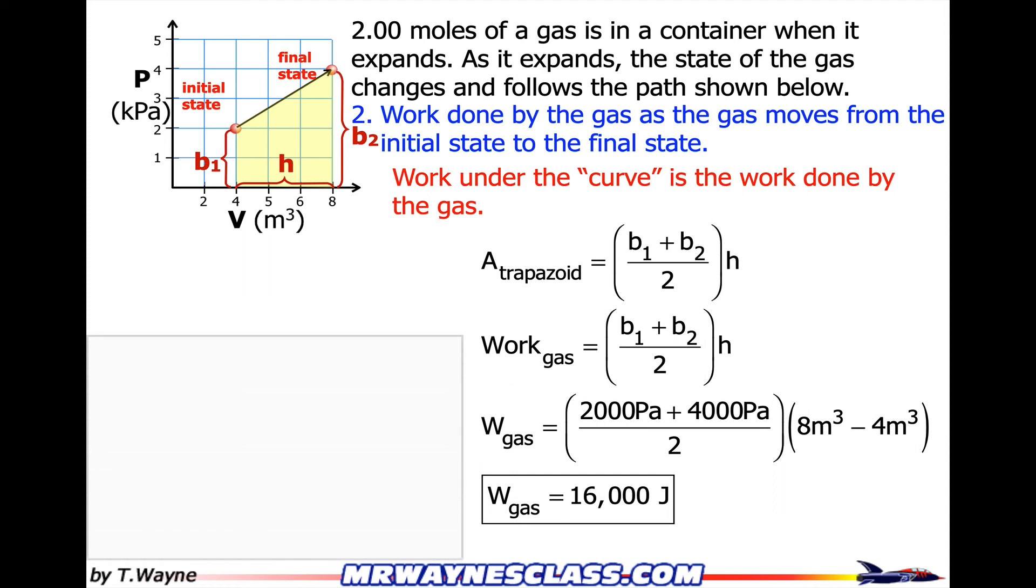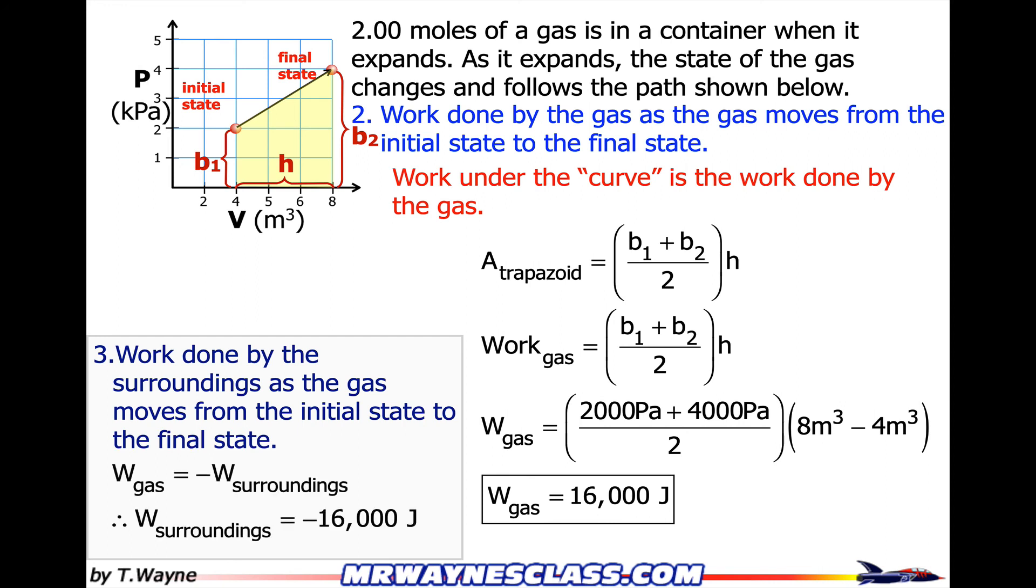Question 3 asks to find the work done by the surroundings as the gas moves from the initial state to the final state. So what I know is that the work done by the gas is equal to the negative, or the opposite, of the work done by the surroundings. So they're opposites. So that's easy. That means that the work done by the surroundings is negative 16,000 joules.